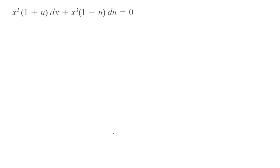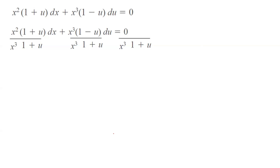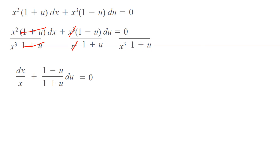In the next step, we're going to convert this into a separable differential equation. Let us divide everything by x cubed times (1 plus u). We can cancel out (1 plus u) here, and cancel out x cubed here, and on the other side you have 0 divided by this quantity. It simplifies into dx over x plus (1 minus u) over (1 plus u) du equals 0.